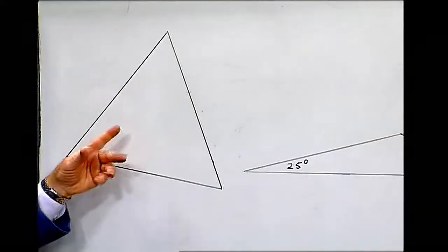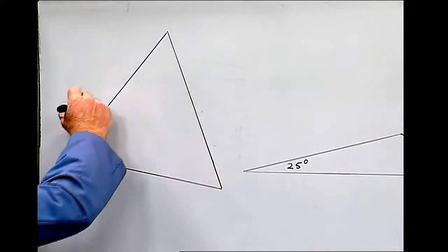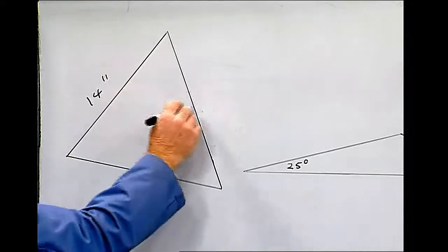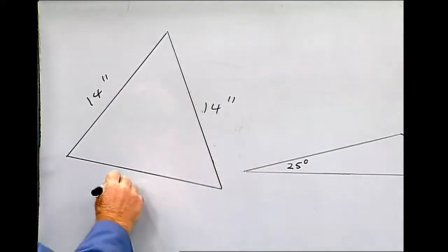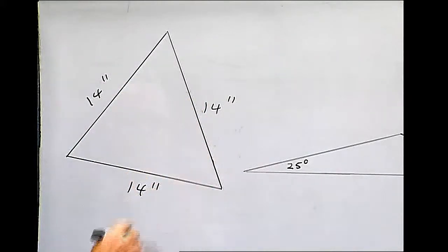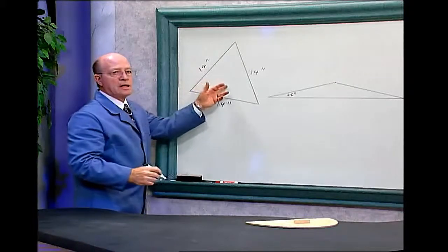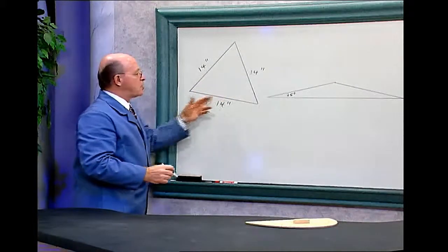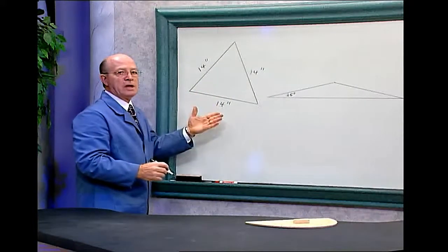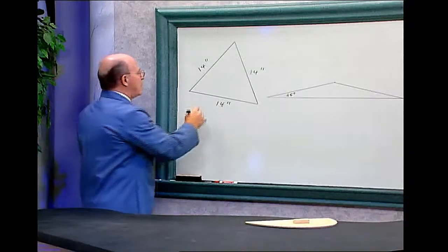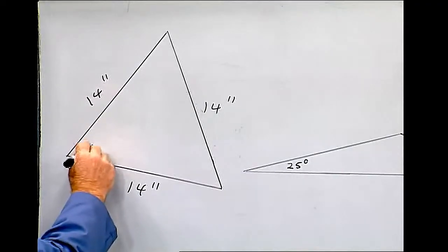If it's an equilateral, we know all the sides are equal. Let's make that 14 inches. We know our triangle has 180 degrees, the sum of all the angles, so we divide 180 by 3, and each angle is 60 degrees.